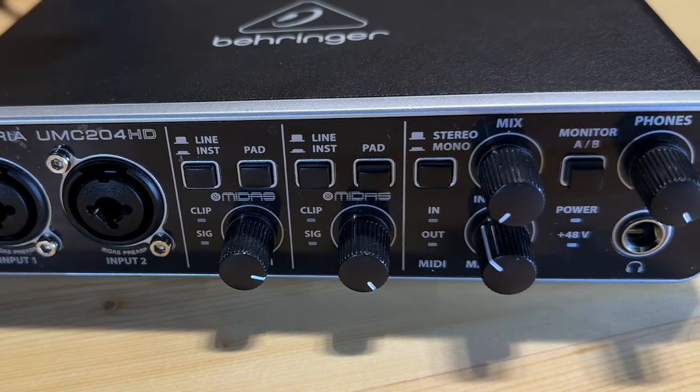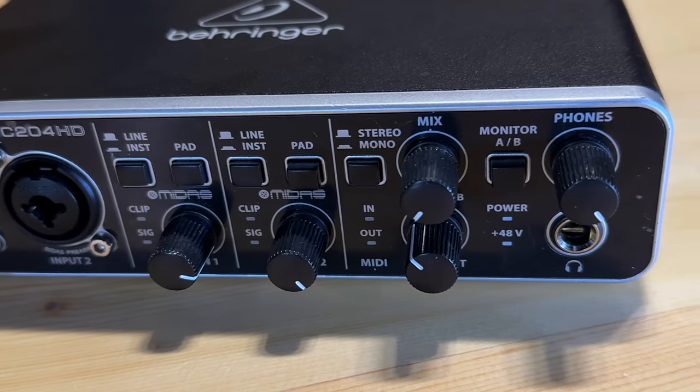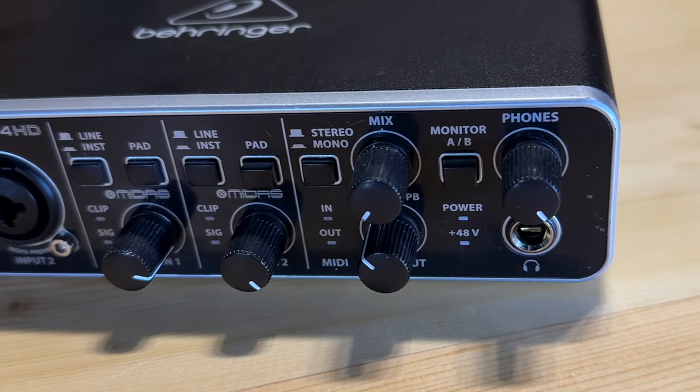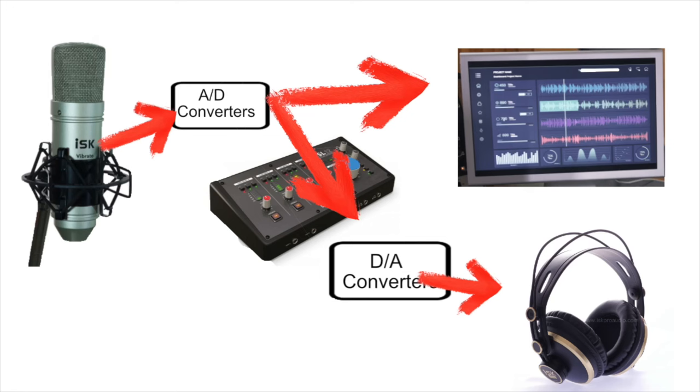So how do we not monitor through the DAW? The first and most simple solution is to use direct monitoring. This is a feature built into every audio interface where the interface routes the incoming audio signal directly to the headphone output. The monitored audio still passes through the ADDA conversion so there will be about a millisecond of latency, but this is not noticeable. The vast majority of professional studios use direct monitoring.